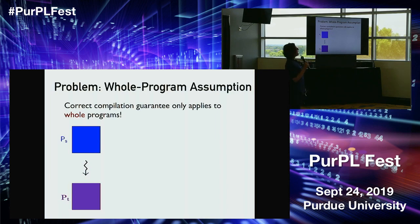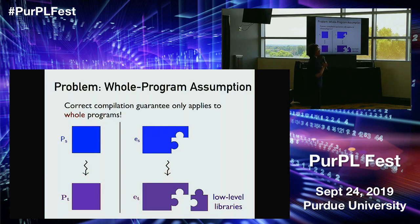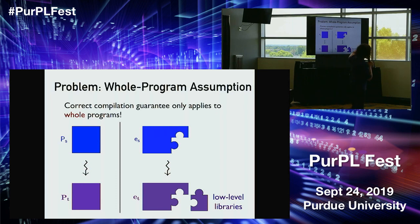Since 1967, the vast majority of work in compiler verification has made a whole-program assumption: you get a correct compilation guarantee that only applies if you compile a whole program. I'll write a capital P for whole programs — PS for source, PT for target — and lowercase e for program expressions, pieces of a program: ES compiling to ET. In reality, we compile fragments, then link them with something.